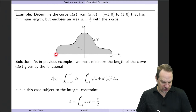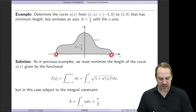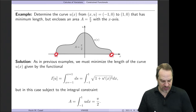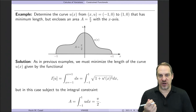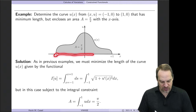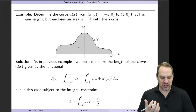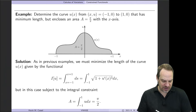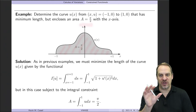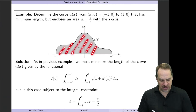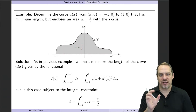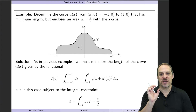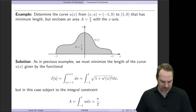Let's look at an example. We have two points, (−1, 0) and (1, 0), on the x-axis of the x-u plane, and we want to find the curve of minimum length between those two points. Without any constraint, we already know the answer — it's a straight line. However, we add the constraint that the area under the curve u(x) must equal π/2. So we fix the area under the curve and determine the u(x) that minimizes the distance between those two points subject to that integral constraint.